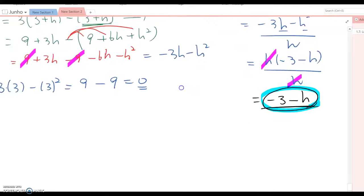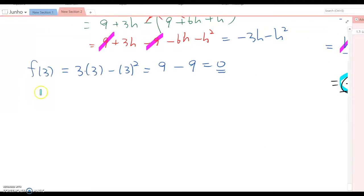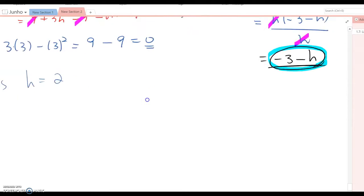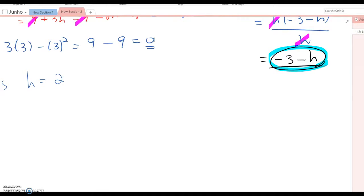One example: let h equal 2. Then the second point will be 5, as you know, because the initial value equals 3. Then you just plug that in here. Then negative 3 minus 2.